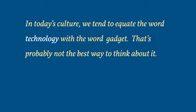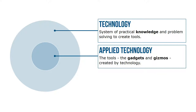In today's world, we tend to equate the word technology with the word gadget — any device or tool that's new or interesting gets labeled as technology. But that's probably not the best way to think about it. When we talk about gadgets, we're really talking about applied technology. Applied technology are the tools, gadgets, or gizmos created by technology. The technology behind the gadget is the system of thought that allowed the gadget to be created in the first place — for instance, you couldn't create the modern smartphone without more basic technologies like metallurgy, logic, and supply chain management.